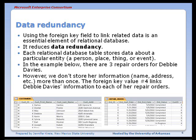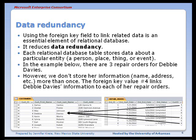In the example below, there are three repair orders for Debbie Davies, but we don't have to store her information — her name, her address, et cetera — more than once. Her information is in the customer table, and the foreign key value number four, which is her customer ID, links every repair order she has to her information.